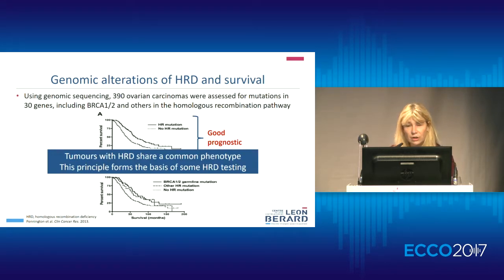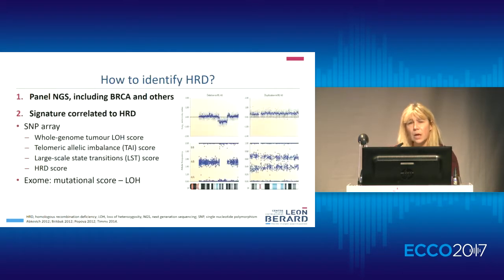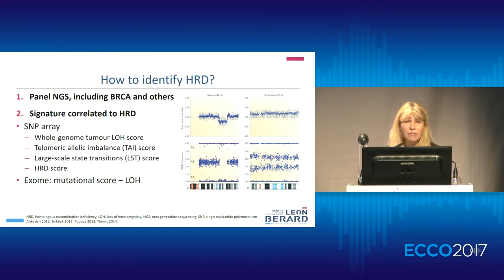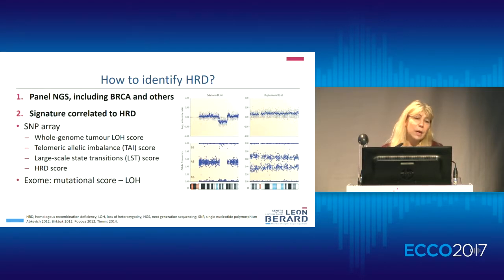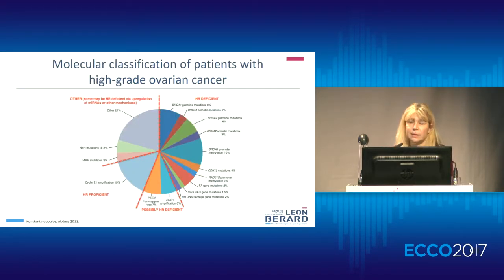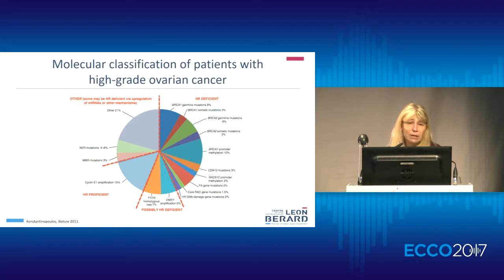More generally, tumors sharing the same common phenotype will push us to define a clear test to identify these patients. How to identify a tumor with homologous recombination deficiency? We have today two ways, two pathways to explore: a panel of next generation sequencing of all genes involved in homologous recombination, or genomic scar exploration - a signature correlated to homologous recombination. When we look at the molecular classification of high-grade serous ovarian carcinoma, we identify BRCA1 and BRCA2 as major genes, but also a long list of other genes involved in this recombination repair.